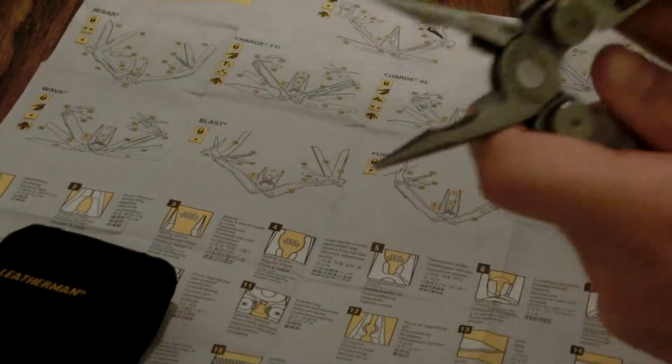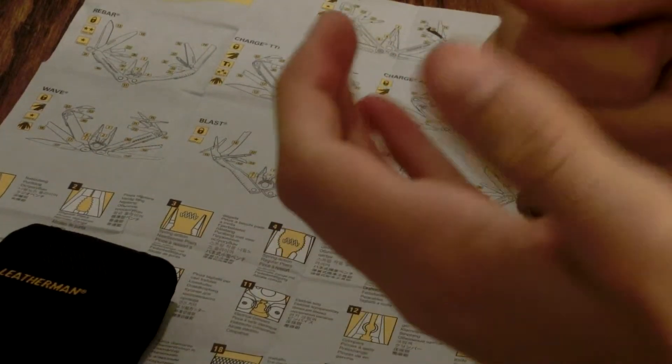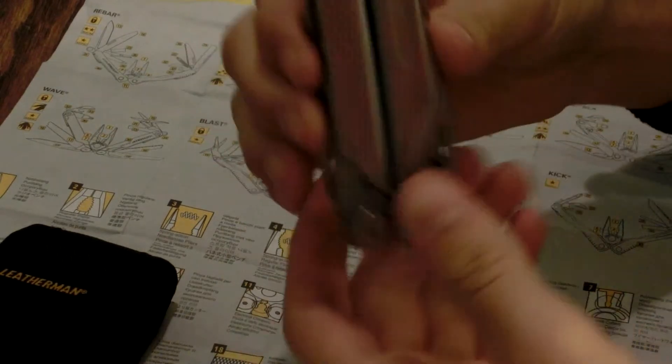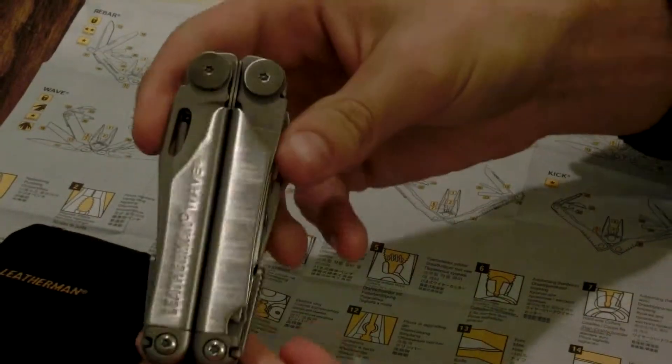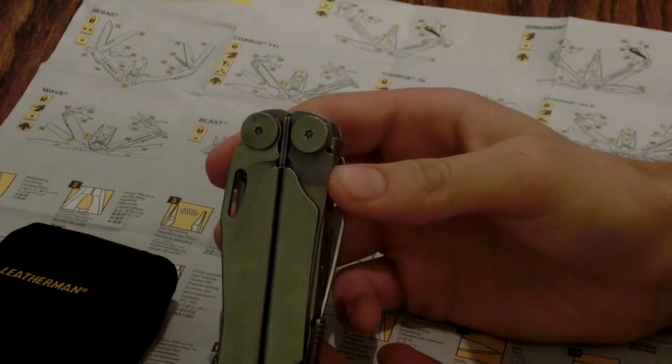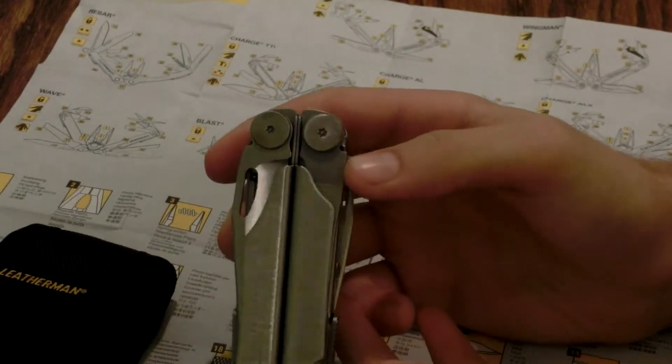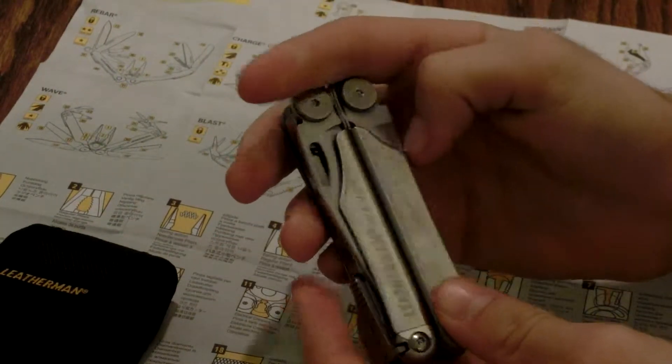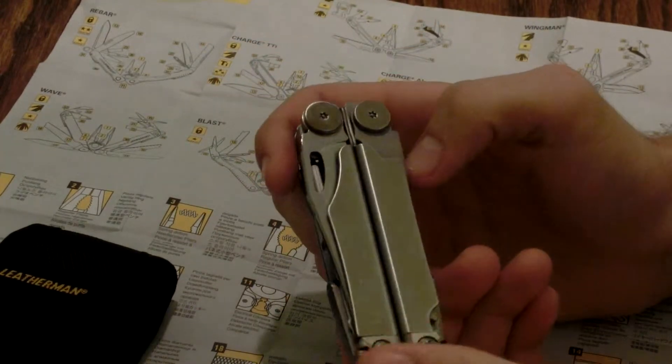Folds up to just four inches long. So whenever it's folded up to just four inches long, again the knives are about two to three inches long each, the smaller ones on the inside are about an inch to inch and a half. It has 17 tools in one, it's made in the USA, it has a 25 year warranty.